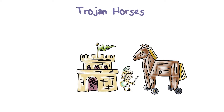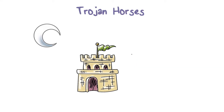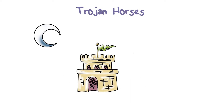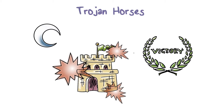The Trojans thought the horse was a gift to acknowledge that the Greeks had been defeated. And so they brought the horse into the city of Troy. At night, the Greek soldiers hidden in the horse came out, and they let their fellow soldiers waiting outside the city come in as well. As a result, the Greek soldiers passed all of Troy's defenses and destroyed the city and won the war.